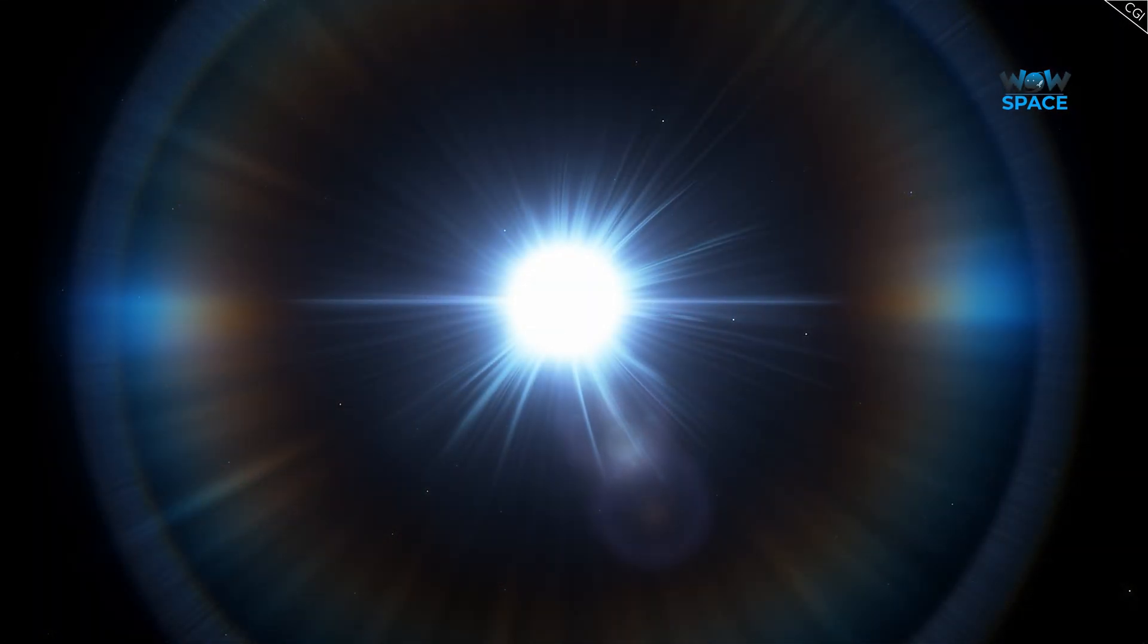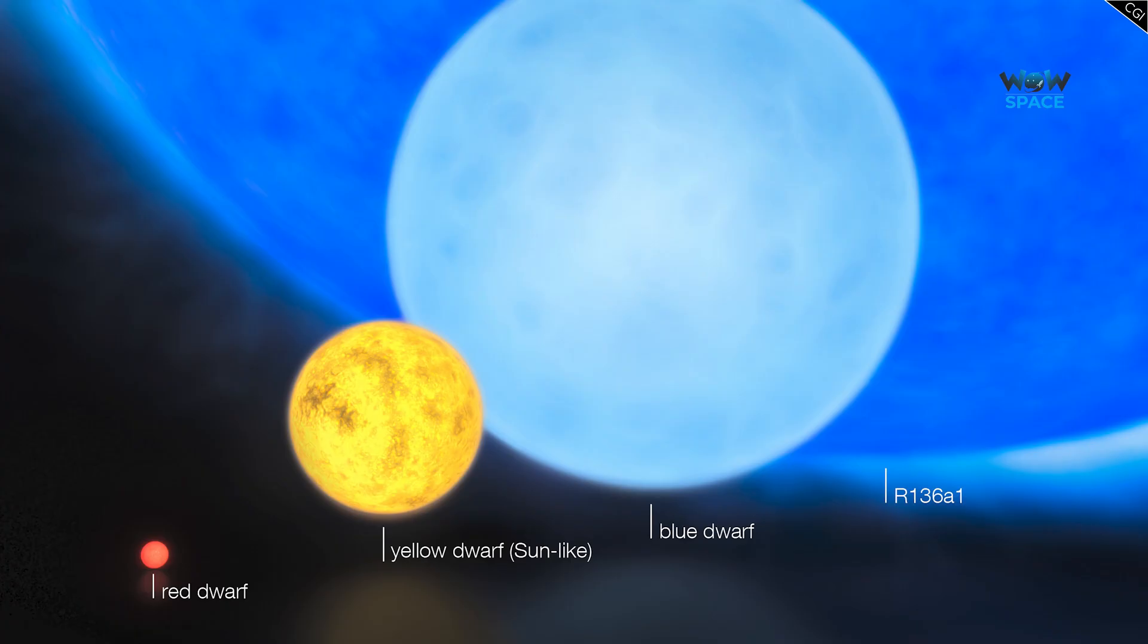The theoretical limit of a star is around 150 solar masses, or 150 times the mass of our Sun. Although, there are some stars out there that test this theory, like the most massive star that we know of, R136A1, which is apparently 300 solar masses.